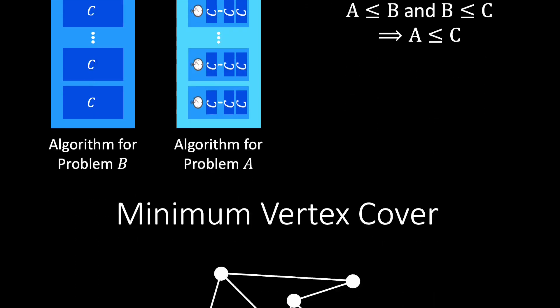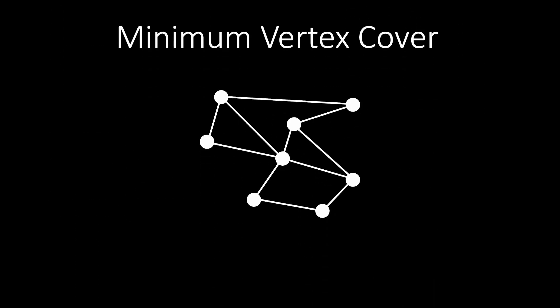Let us look at another problem: the minimum vertex cover problem. Given a graph G, a vertex cover of G is a subset of the vertices such that every edge is incident to at least one vertex in the subset. Can you pause the video and verify whether the set of red vertices forms a vertex cover?